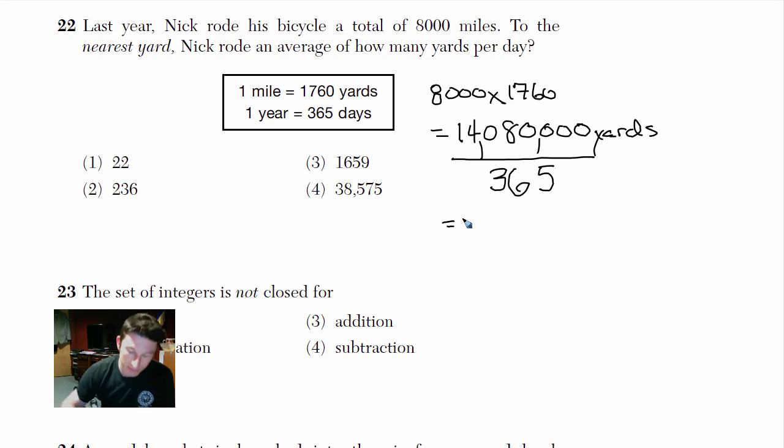Okay, so when we do that, divided by 365. Now look at your answer choices here. Can you kind of guess which one it's probably going to be? It's either going to be 3 or 4, right? But we divide by 365 and we get 38,575. Choice four. Alright, that's it. Let's move on to the next one.